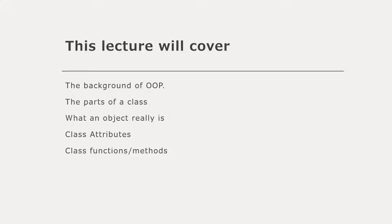We're going to give you a little bit of background on OOP, talk about all the individual parts a class contains, what an object really is, and what class attributes and class functions or methods are. These are the main parts of OOP and what we'll be discussing in this lecture. Last lecture went in-depth into what it looks like in action. This lecture is about the theory and background so you have the context needed to code effectively using OOP.